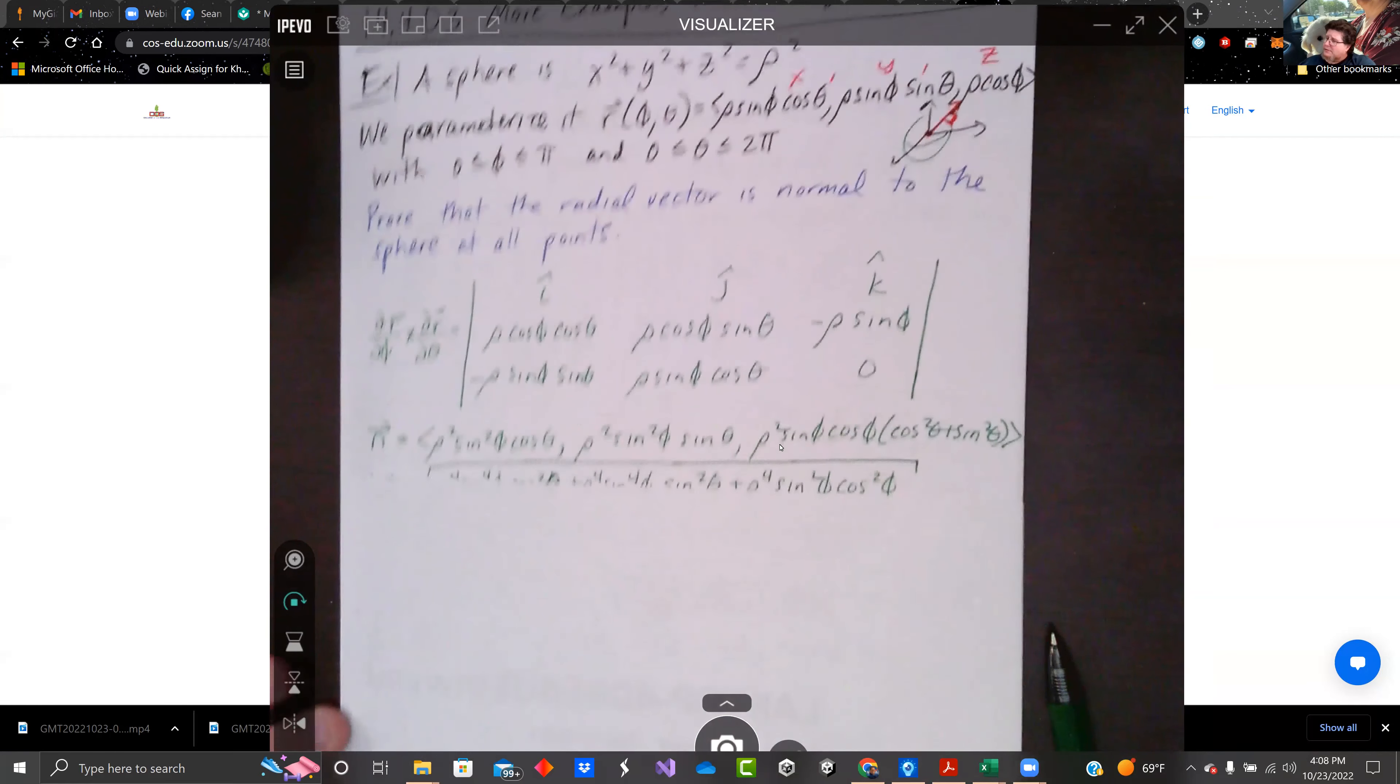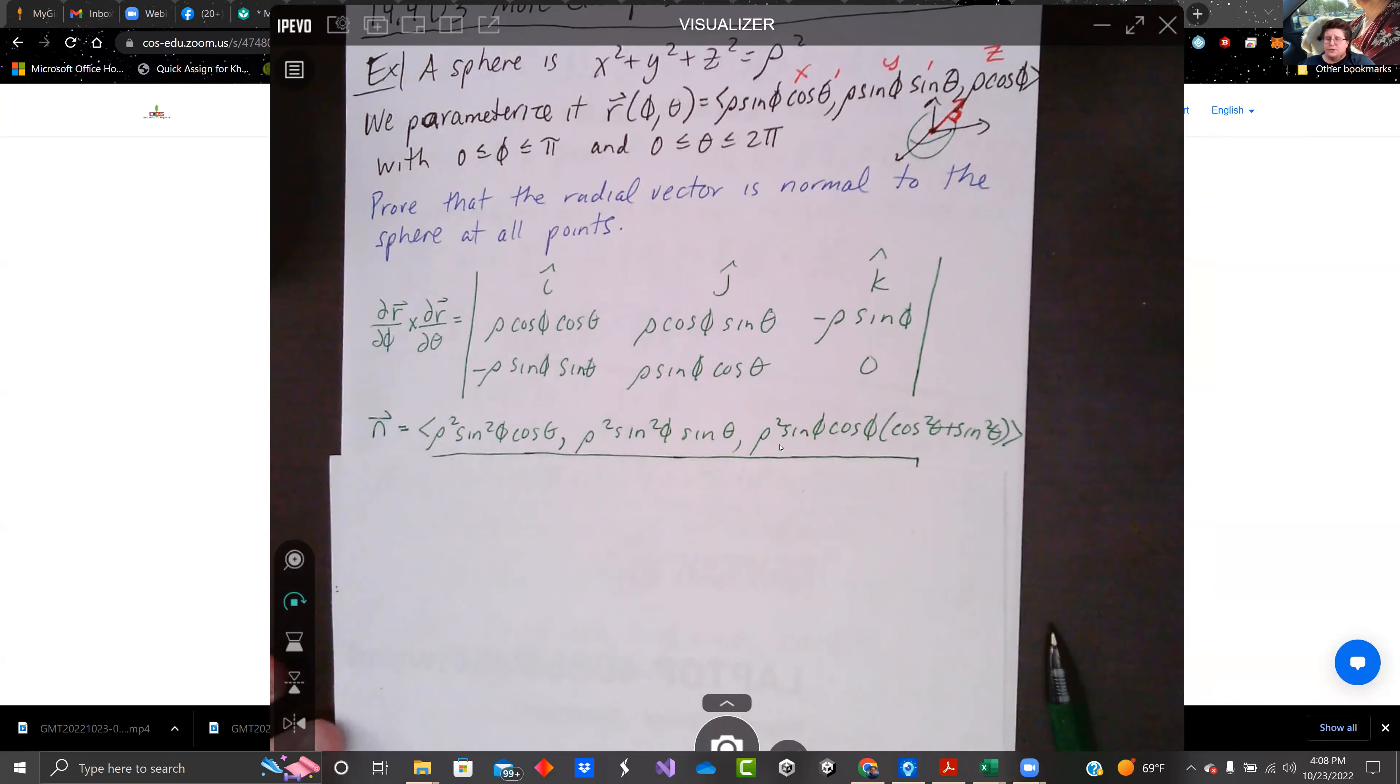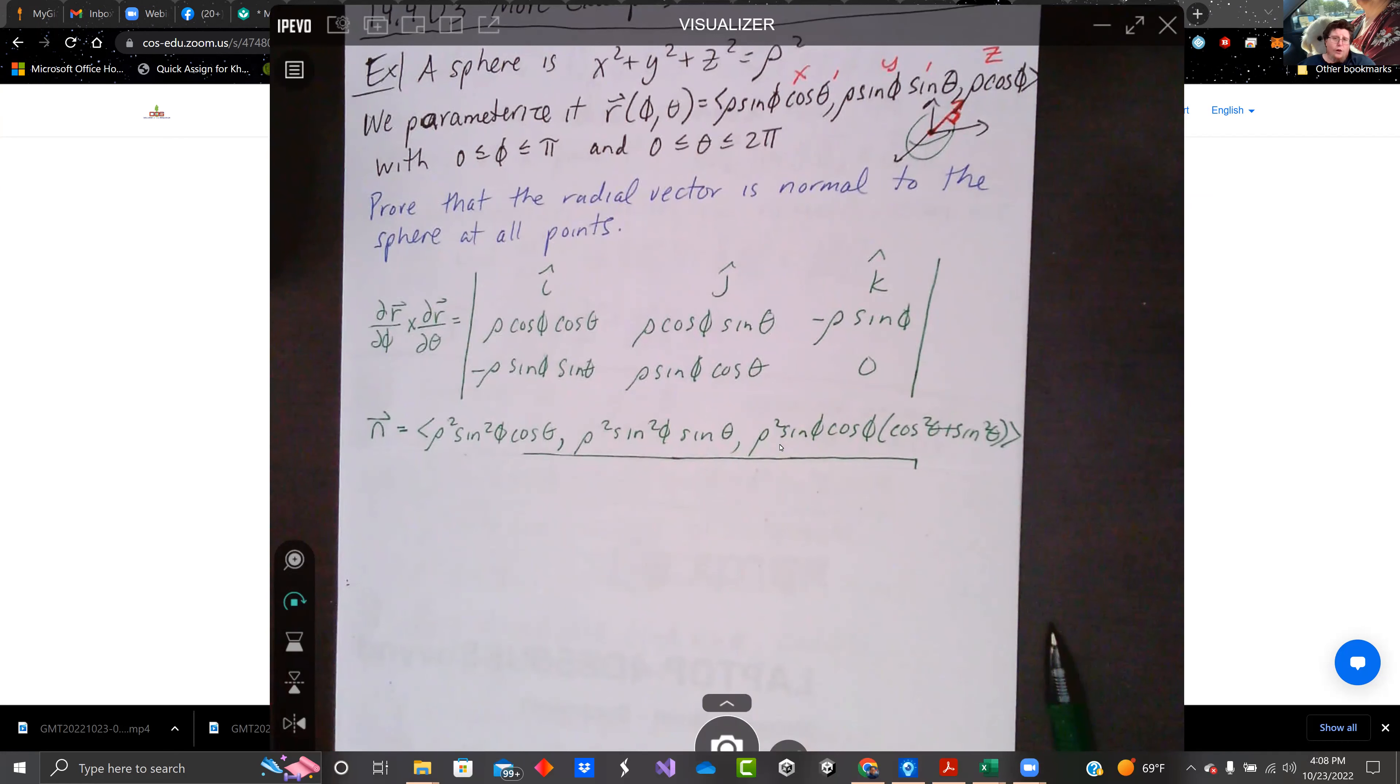Then we do the cross product. So our x component is rho squared sine phi squared cosine theta. The y component is rho squared sine phi squared sine theta. And then we've got rho squared sine phi cosine phi times cosine squared theta plus sine squared theta, which is obviously one.